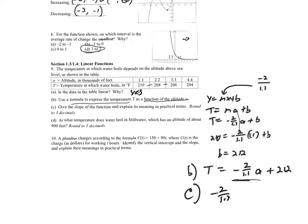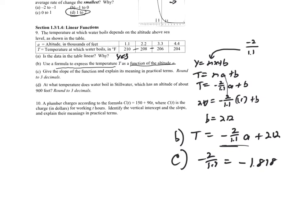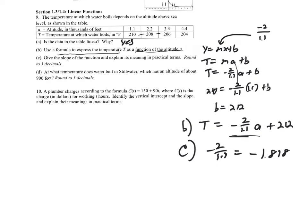Rounding using a calculator gives approximately negative 1.1818. To explain its meaning in practical terms, think about the units: the negative 2 is measured in temperature (degrees) and the 1.1 is measured in altitude (thousands of feet). So the slope represents degrees per foot — the number of degrees the boiling point decreases for every foot increase in altitude.